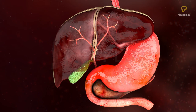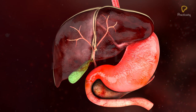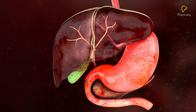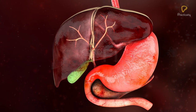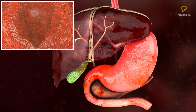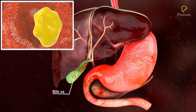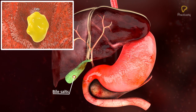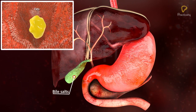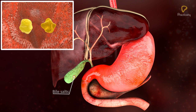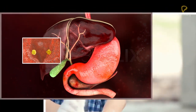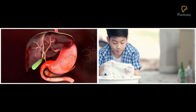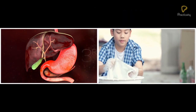The liver produces bile juice. Bile does not contain any enzymes but is essential for the digestion of fats. Bile salts present in the bile juice emulsify fats, breaking them into smaller molecules — similar to the emulsifying action of soap on dirt.